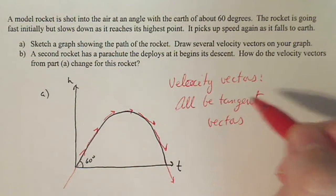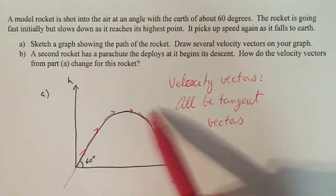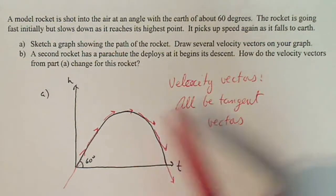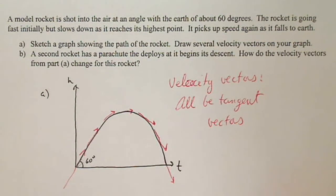Now part B says a second rocket has a parachute that deploys as it begins its descent. So somewhere in here it deploys. How do the velocity vectors from part A change?